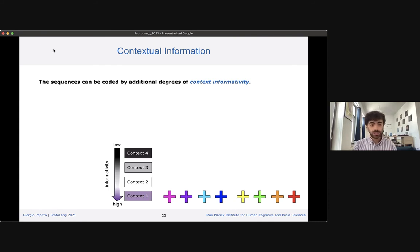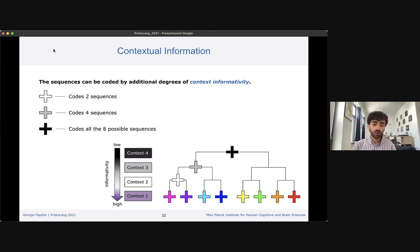These sequences can be grouped together in small classes and to each class a cue is assigned which is defined by a specific context informativity. For example, the white cue stands for the class of two sequences, pink and purple. Whenever participants see this white cue, they know it could stand for one of the two sequences. The gray cue stands for four possible sequences: pink, purple, light blue, and blue, while the black cue codes all eight possible sequences. As we move higher in this informativity hierarchy, the less information is given by the context cue.